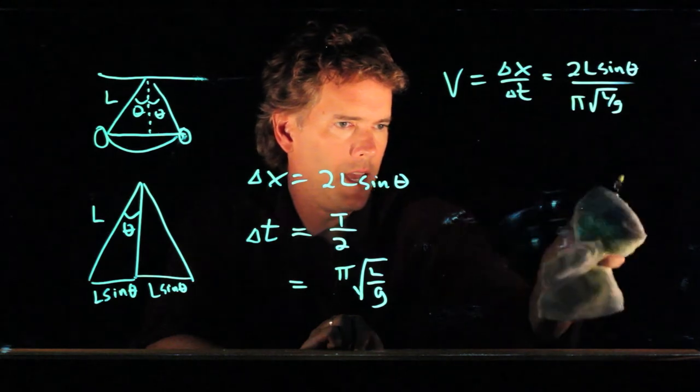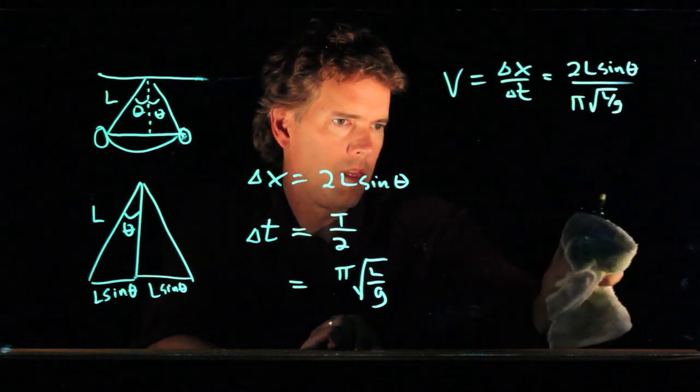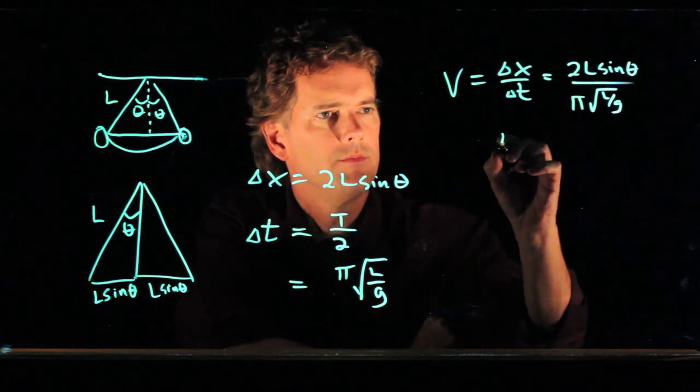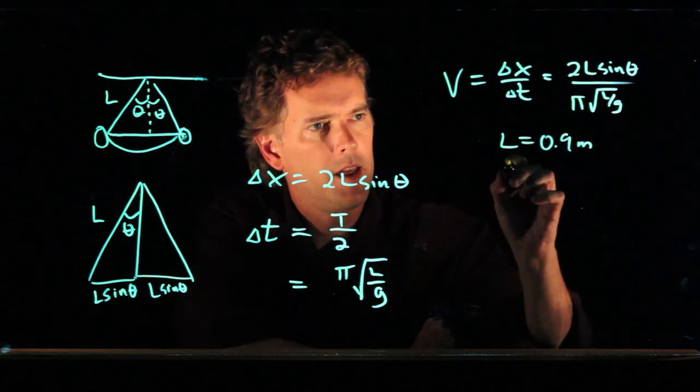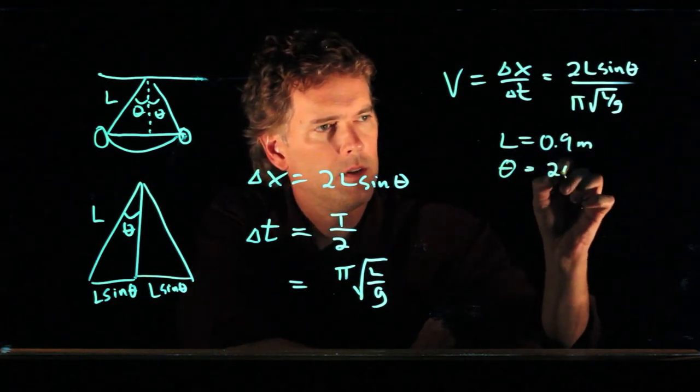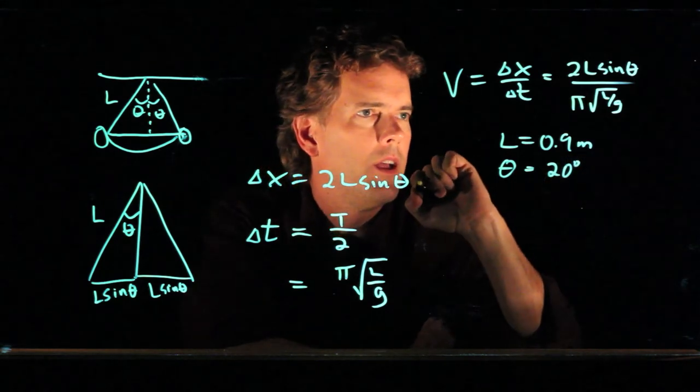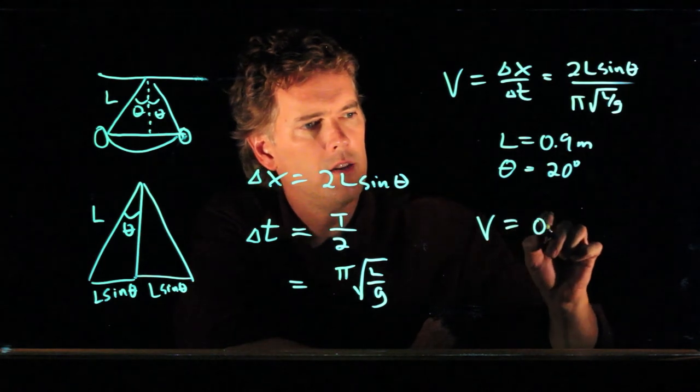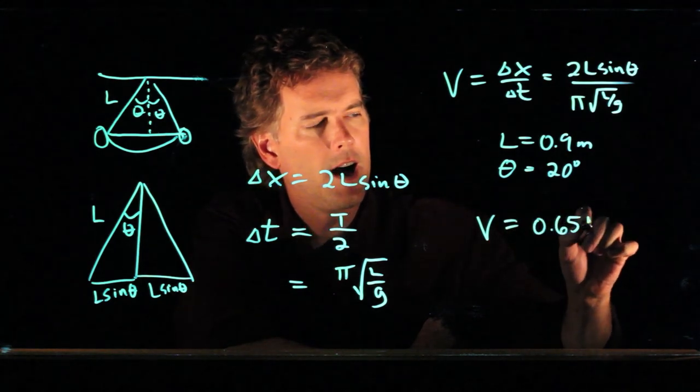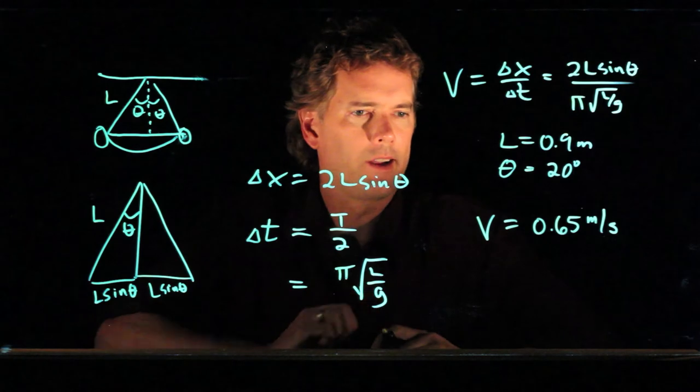So let's take an arm length of 0.9 meters. Let's say that that angle that you swing to is 20 degrees. And if you plug all those numbers in, you should get V is 0.65 meters per second.